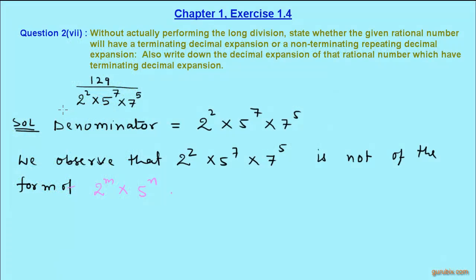There is the next question, and in this question we have to check whether this rational number 129 over 2 raised to 2 multiplied by 5 raised to 7 multiplied by 7 raised to 5 has a terminating decimal expansion or a non-terminating repeating decimal expansion.